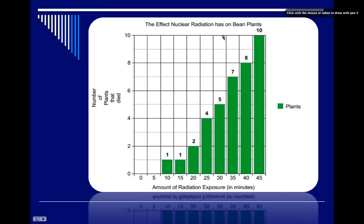Now in the title that kind of gives away independent and dependent variables. The effect that nuclear radiation, independent variable, I'll put IV over that, has on bean plants. Now what is the effect on the bean plants?